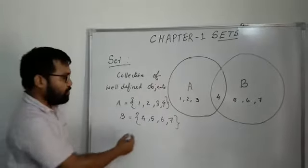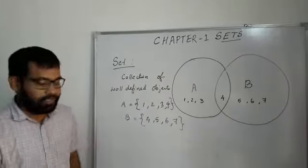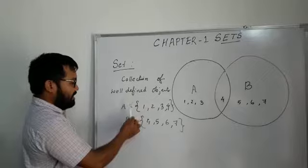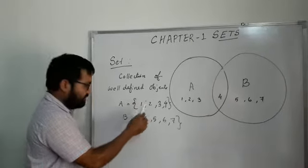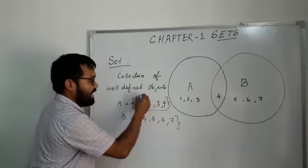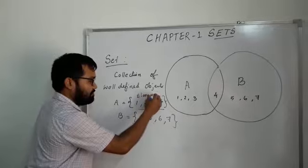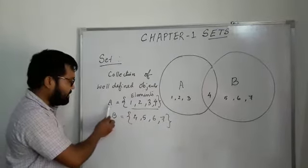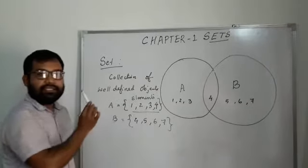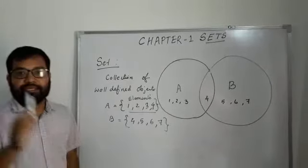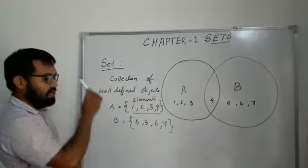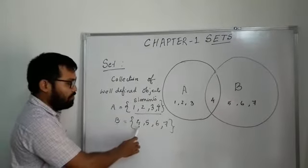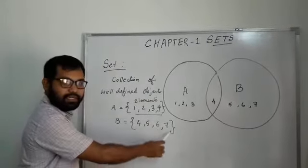These are the next four terms of the natural numbers. So we can say A is a particular set where one, two, three, four are called elements, and it is defined by set A, that's a capital letter with curly braces. One, two, three, four are elements of set A, and four elements of set B are four, five, six, seven.